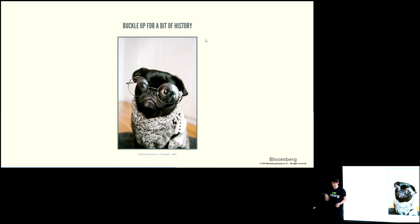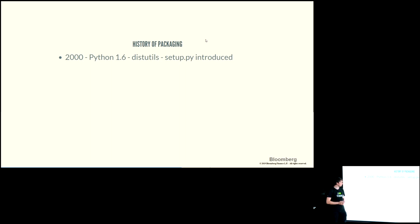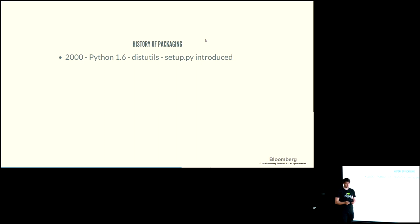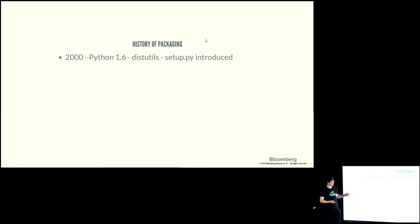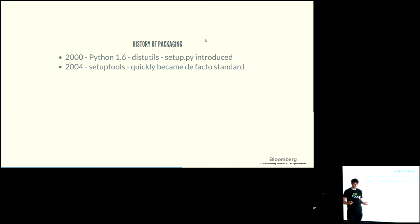Here's a short history of the Python packaging ecosystem. It started around 2000 when enough projects were being shared that people thought there should be some standard way of defining packaging. Since no one knew exactly what was needed, they took the flexible approach: instead of standardizing everything, they gave you a script file — setup.py — where you could specify what you wanted. This provided a core framework but allowed you to write anything in the setup file, making it easy to iterate and adapt.